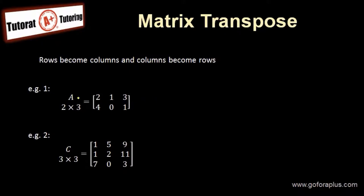Example one: matrix A is a 2 by 3 matrix. Two denotes two rows, three denotes three columns. When we make the transpose, we write A transpose with superscript T. Remember this is not a power, this is a superscript T.